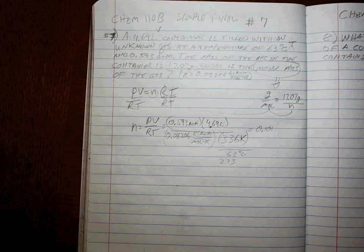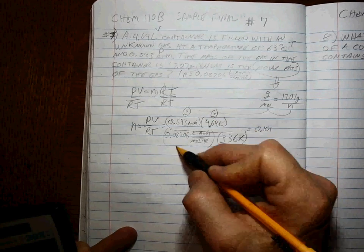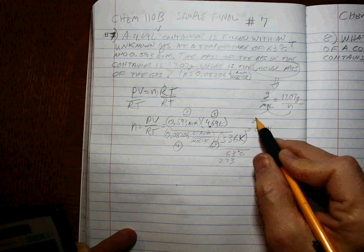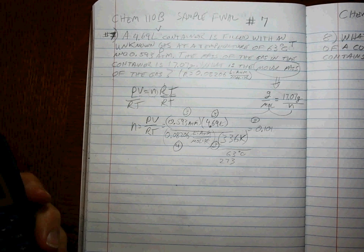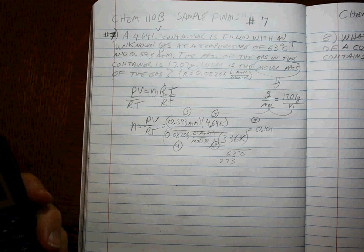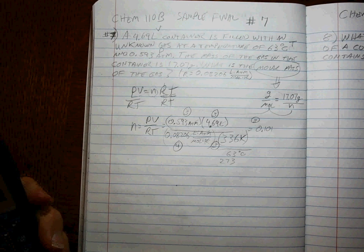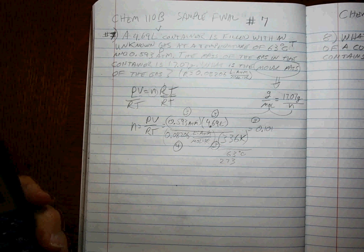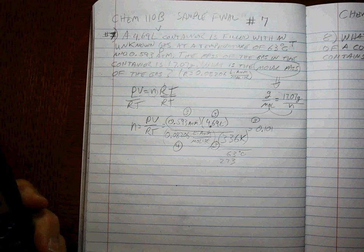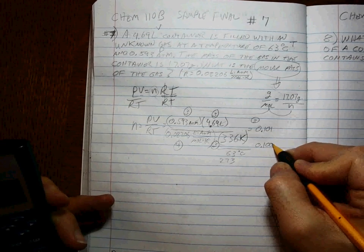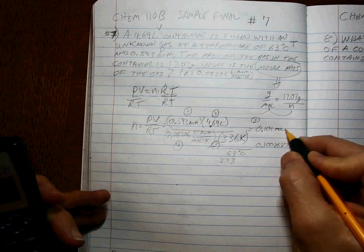0.101. You know what? Just so that we don't run into rounding errors, I know that this is three sig figs, this is three, this is four, and this is three, so we're going to have three sig figs here. But let's just make sure that we're careful with our sig figs anyway. 0.593 times 4.69 divided by 0.08206 divided by 336. So that's 0.10086. That's moles, and that's N.